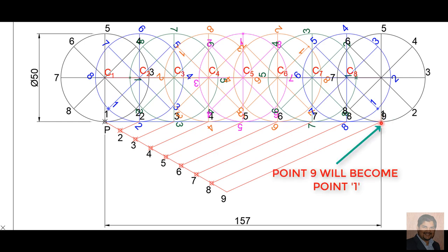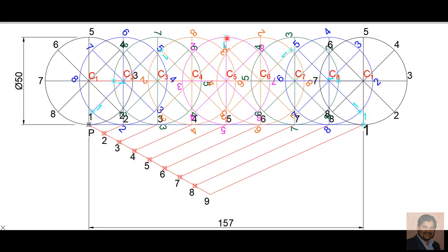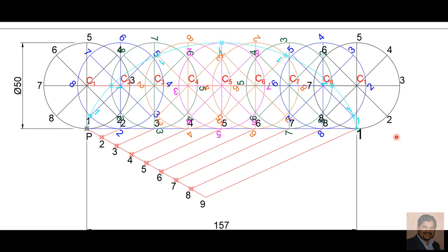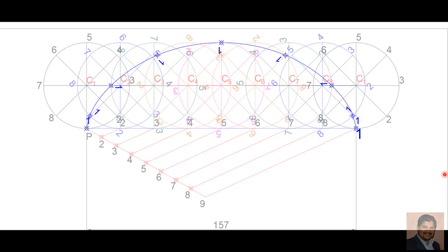This will be my final point, point 1. As you can see, all the blue points represent the positions of point 1. If I connect all these points, my curve will look like this. If I highlight the curve, this is called a cycloidal curve.